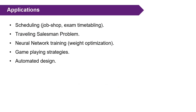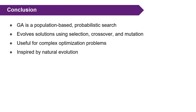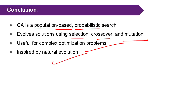Genetic algorithms are used in many applications: scheduling, the traveling salesperson problem, neural networks, game playing, and automated design. In conclusion, it is a population-based probabilistic approach. The main concepts involve selection, crossover, and mutation. It is mainly useful for optimization problems and is inspired by natural biological evolution.